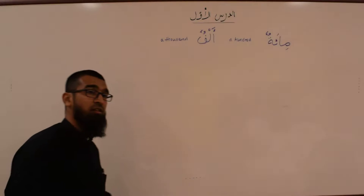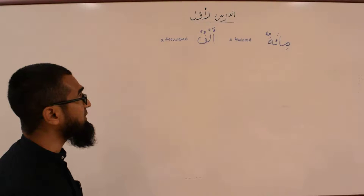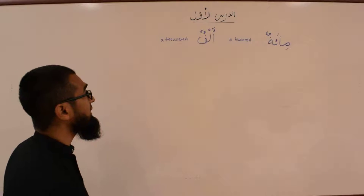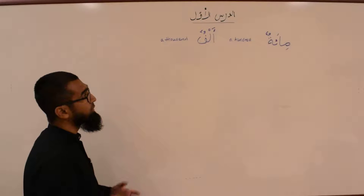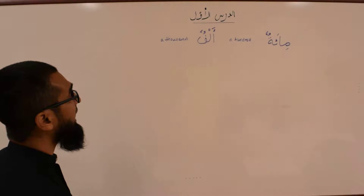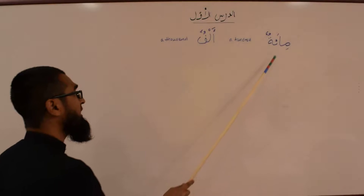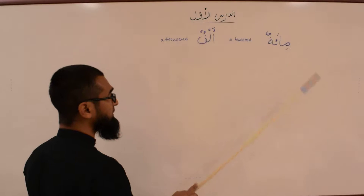The last and final concept for lesson one is the word Mi'atun and Alfun — Mi'atun and Alfun — a hundred and a thousand. Mi'atun.